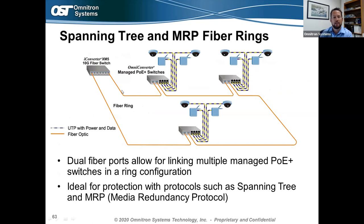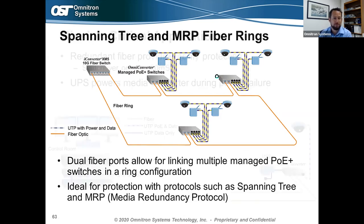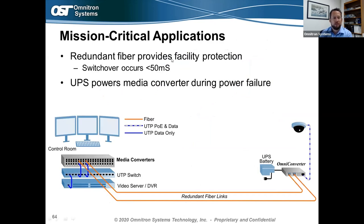Spanning tree or MRP fiber rings are another common fiber networking approach. Using switches with multiple fiber ports, you daisy chain from one switch to the next all the way down the line, then use a fiber port to complete the ring. If a fiber gets cut anywhere in the ring, data that was flowing one way now flows the other way, maintaining connectivity to all devices. For mission-critical applications, combine dual fiber ports with a UPS to back up the device and provide backup power if the main power connection is lost.